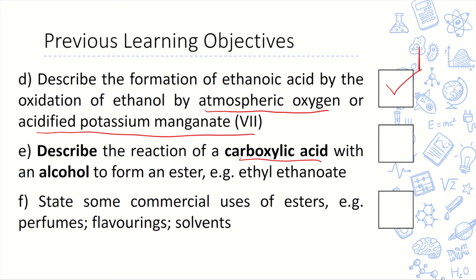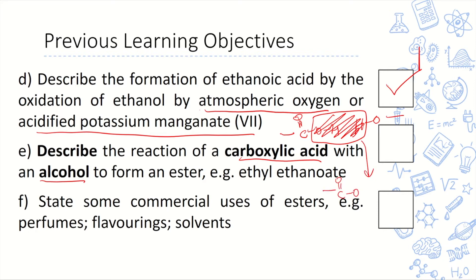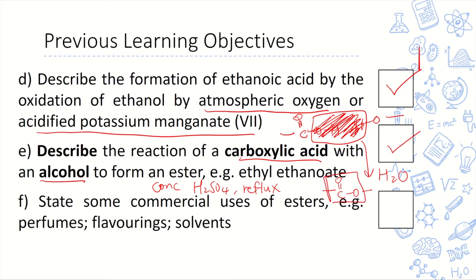We also looked at a new reaction where carboxylic acid reacts with another homologous series — alcohol. The carboxyl functional group and the hydroxyl functional group come together to produce a new functional group called an ester, with C double bond O and O. The OH from the acid and H from the alcohol are released to form water. This reaction is called esterification, and the condition is concentrated H₂SO₄, warm under reflux. Esters have a sweet smell, and they are used commercially in perfumes, flavoring, and nail polish.